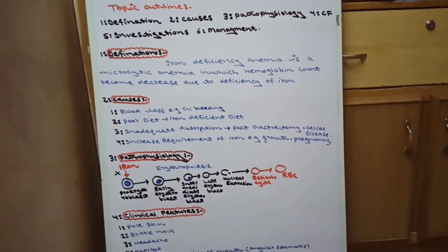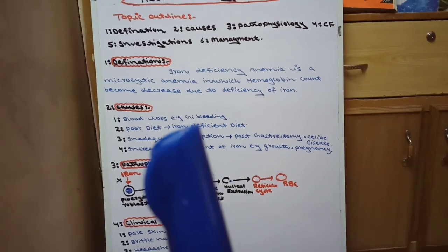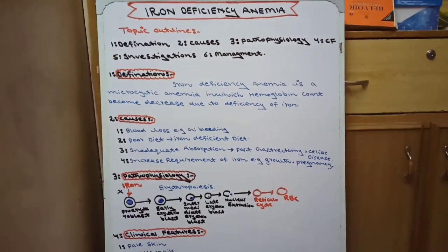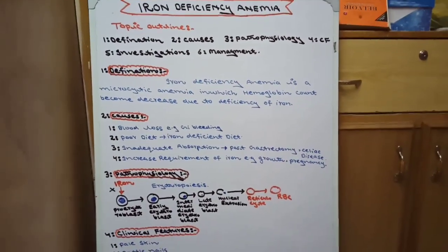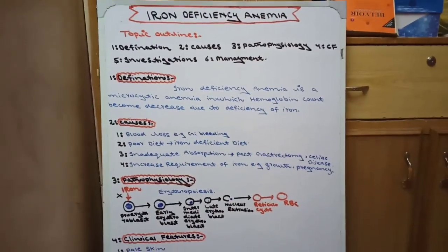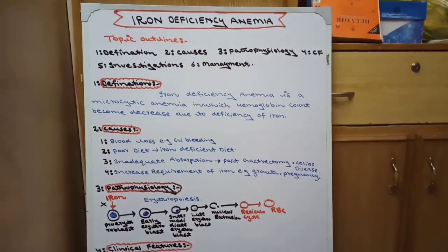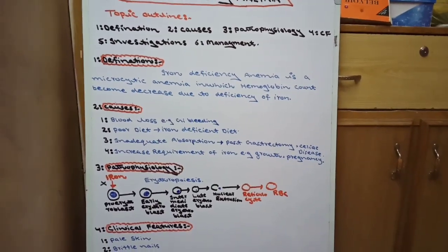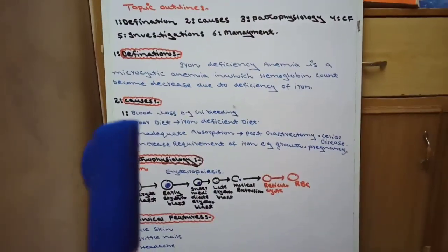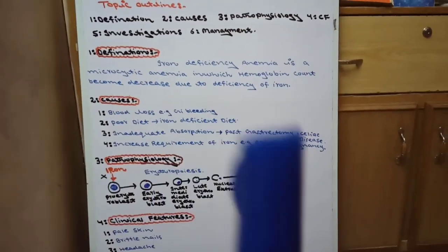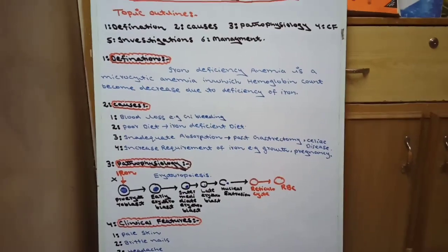There are four causes of iron deficiency anemia. Number one is blood loss — for example, GI bleeding. If blood loss occurs from our body, the result will be iron deficiency anemia. Mostly our professors and doctors ask in viva: in bleeding, which type of anemia occurs? Our answer will be iron deficiency anemia.